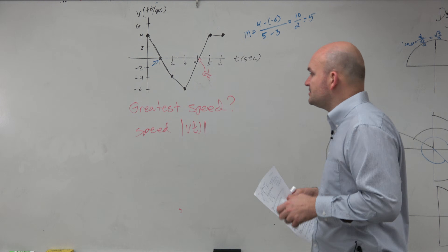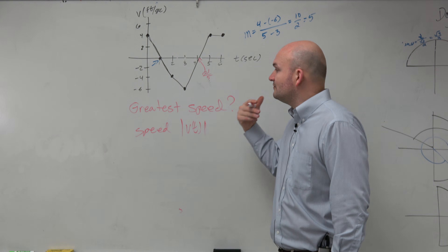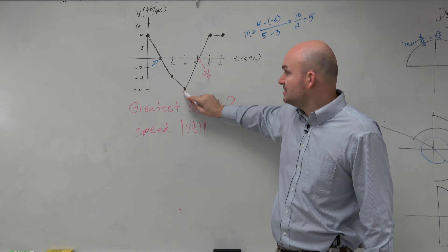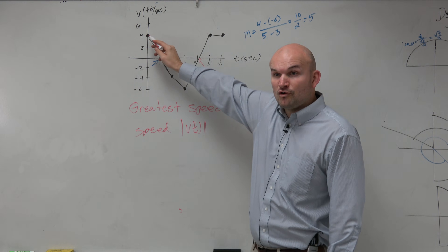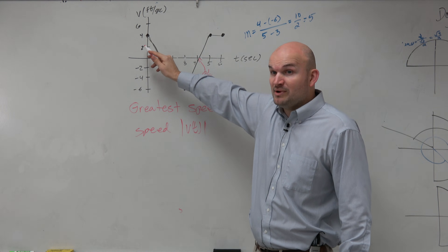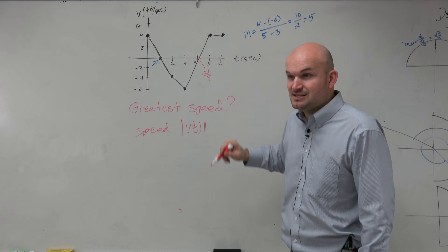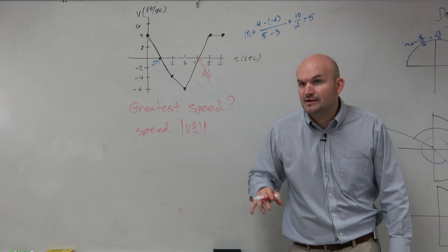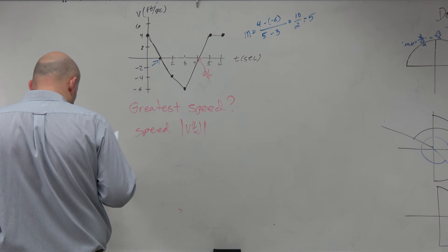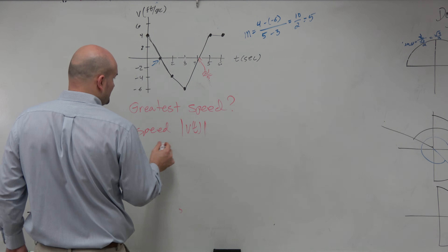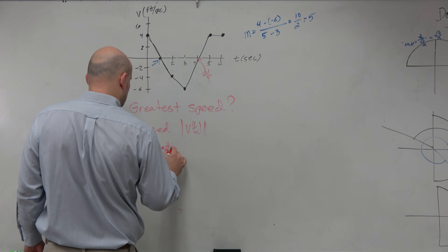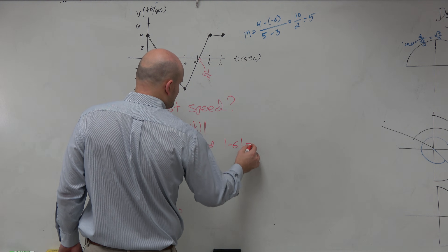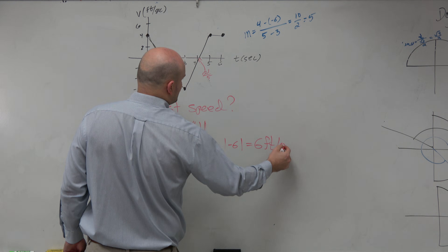So your speed is going to be your absolute value of v(t). We have the v(t) graph, and we're just trying to find the fastest. Do we care if you're going to the left six feet per second, or to the right four feet per second? No, we just want to know how fast you're going. So the fastest you are traveling, regardless of direction, is six feet per second. The greatest speed is the absolute value of negative six, which is just six feet per second.